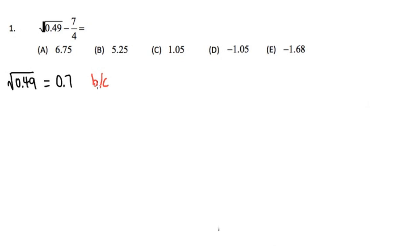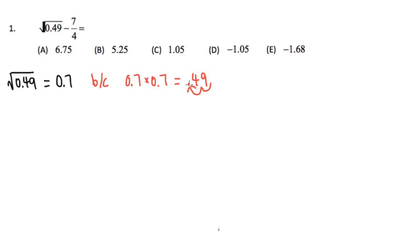Because if we take 0.7 times itself — 0.7 times 0.7 — we first write 7 times 7, which equals 49. Then we count how many decimal places we have altogether. 0.7 has one decimal place, and this 0.7 has another decimal place, so altogether we have 1 plus 1, two decimal places. We look at 49, start from the right, and move 2 places to the left, placing the decimal point there. So 0.7 times 0.7 equals 0.49. That's how we know square root of 0.49 is equal to 0.7.